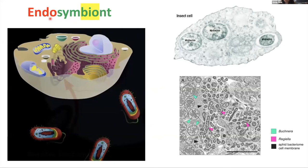Let's break down the word endosymbiont. Endo means within and symbiont means together, and the bio part just means living. So basically we have organisms that are living together within one another.